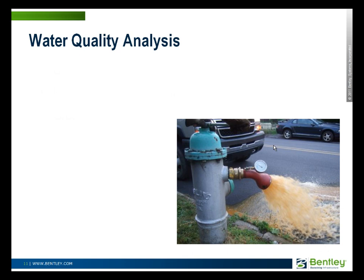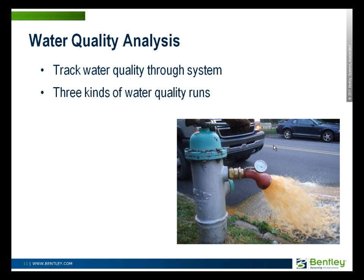Water quality analyses are another kind of run of a water distribution system model. In this case you're tracking water quality through the distribution system — not just estimating pressures and flows, but calculating the water quality aspects of the distribution system. There are three different kinds of water quality runs that can be done in WaterGems. The first and most simple is age — just how old is the water? A lot of times this is about all you need. You're basically using this to figure out where you're likely to have old water in terms of chlorine residual or disinfectant byproduct formation. Age is a good indicator: the places with the oldest water are where you're going to have the most serious water quality issues.